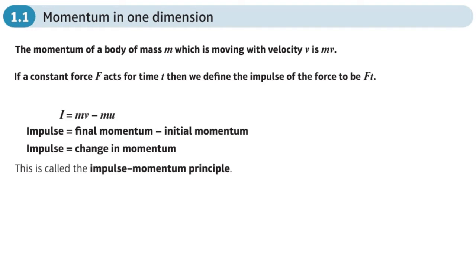This is the first section of the momentum and impulse chapter from the Further Mechanics 1 book. We're looking at momentum and impulse — all the formulae are here at the side, but I want to draw your attention to them. The first one is momentum, and momentum is defined as mass times velocity.